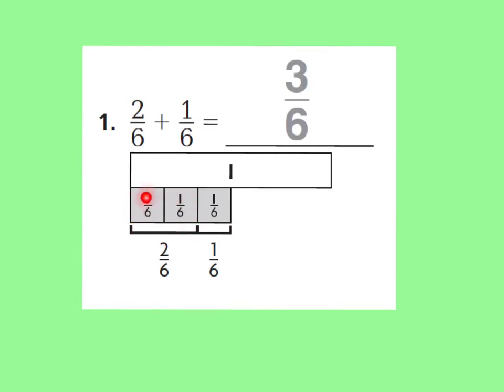So we have 2 sixths here. And if we add another 1 sixths, we'll have 1 sixths, 2 sixths, 3 sixths. That's what our answer is. Now, this fraction strip here is showing us what 1 whole is. So we know that if we kept going and we added another 1 sixths, another 1 sixths, and another 1 sixths, we would have 6 sixths, which is equal to 1 whole. So they're just showing us how it relates to 1 whole.